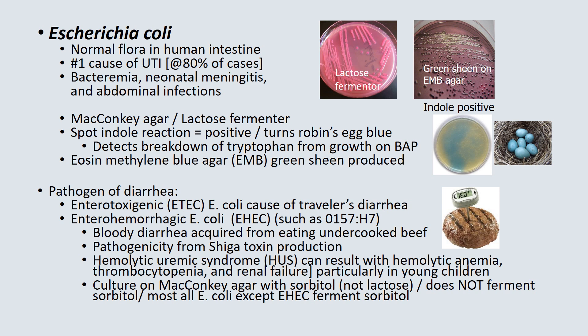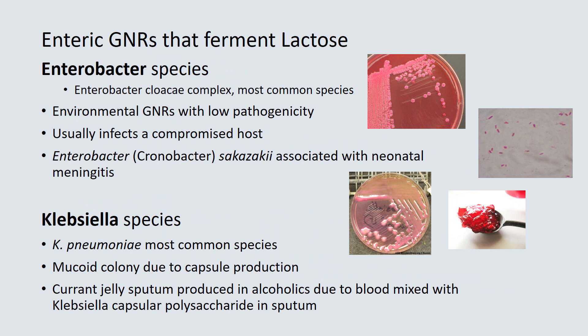You can grow hemorrhagic E. coli on MacConkey agar that contains sorbitol instead of lactose. EHEC organisms are known to be negative on sorbitol — they will not ferment sorbitol, which is characteristic of these organisms. By far, the most sensitive way to look for these is by doing molecular detection.